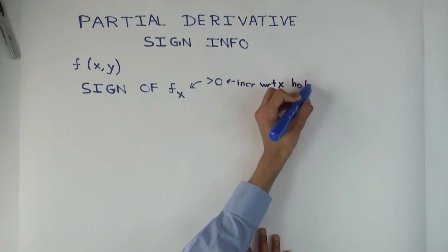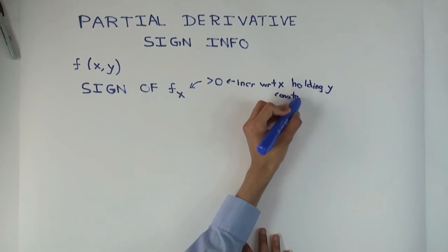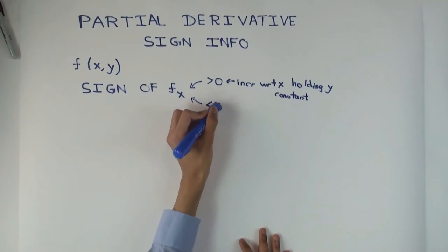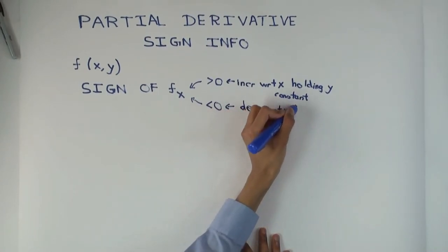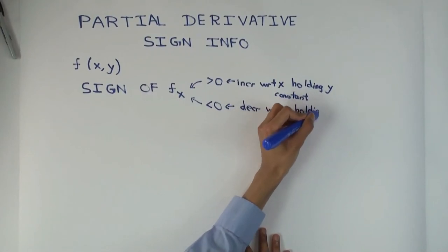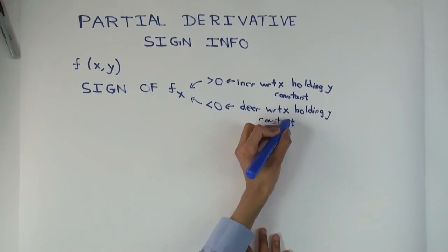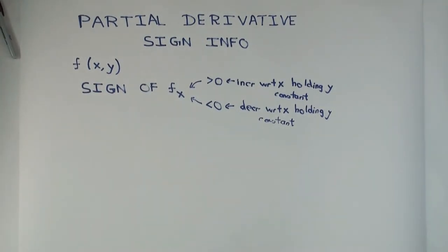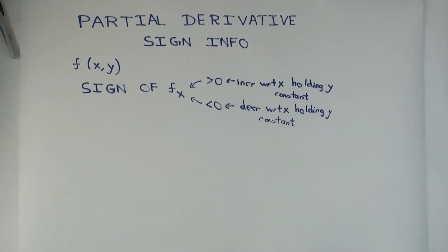I'll ignore the case about the partial derivative being zero because there are some subtleties there I don't want to focus on — less than zero means decreasing. Similarly you can do something with the sign of f sub y, the partial derivative with respect to y. This basically just follows from the corresponding results for single variable calculus.